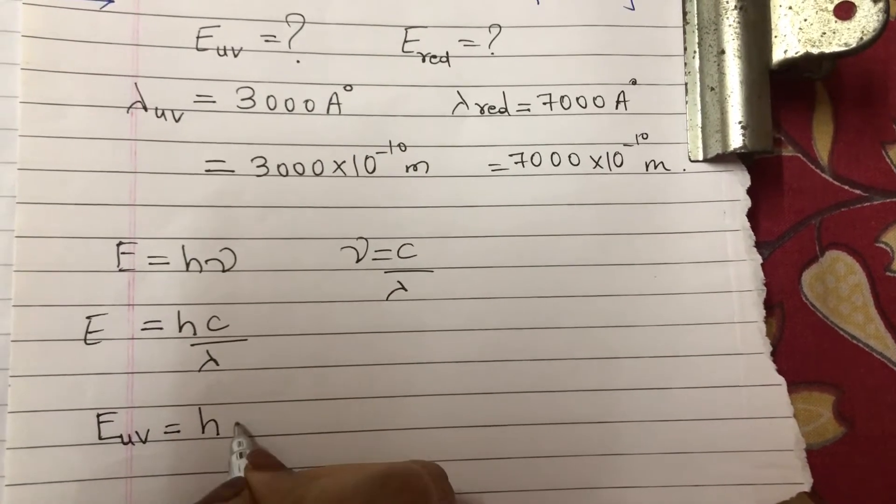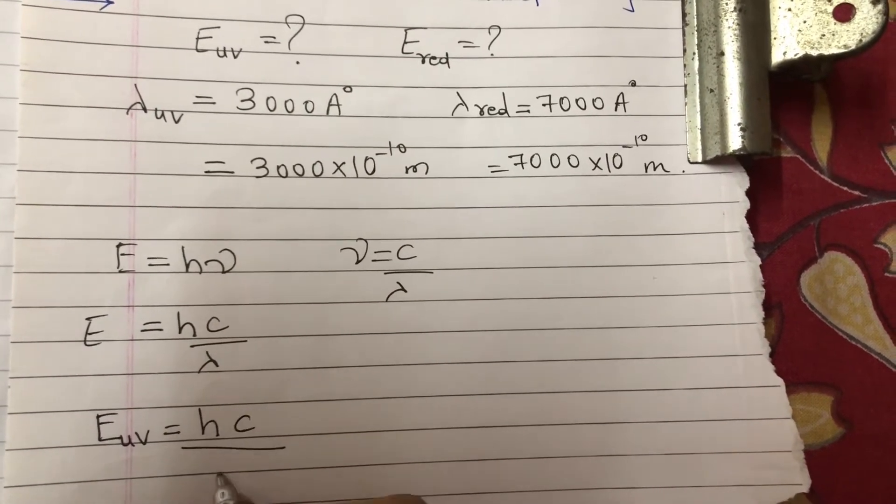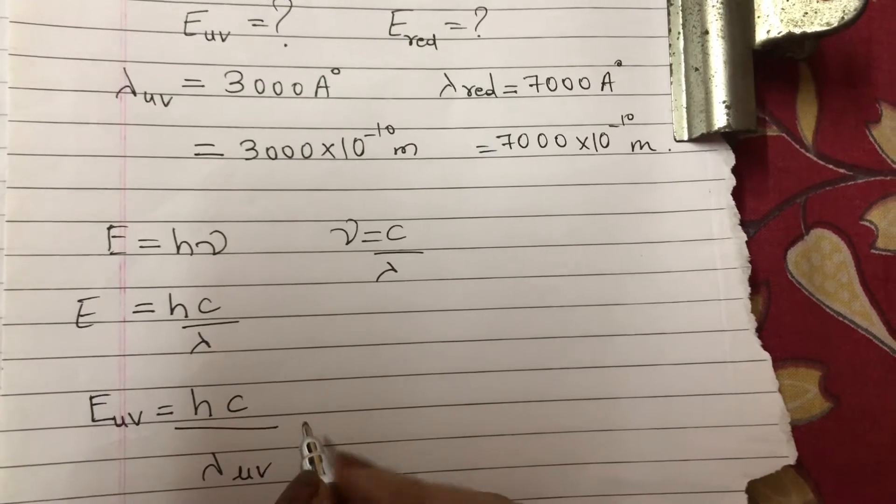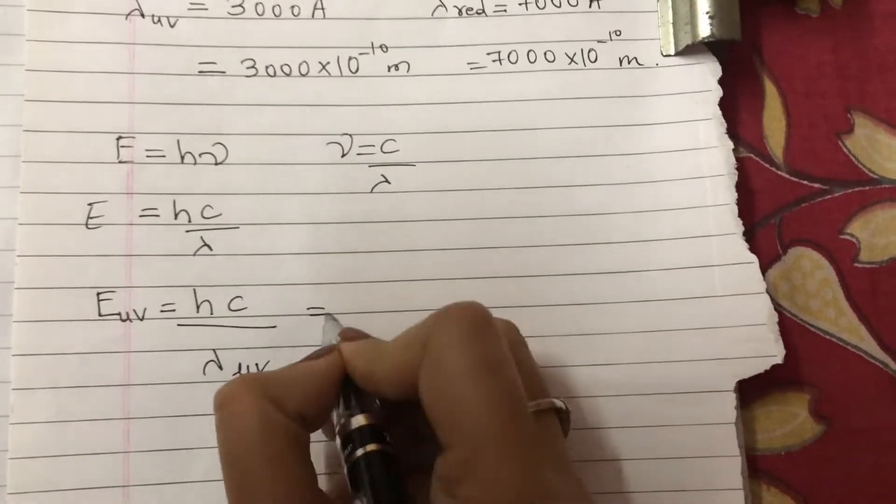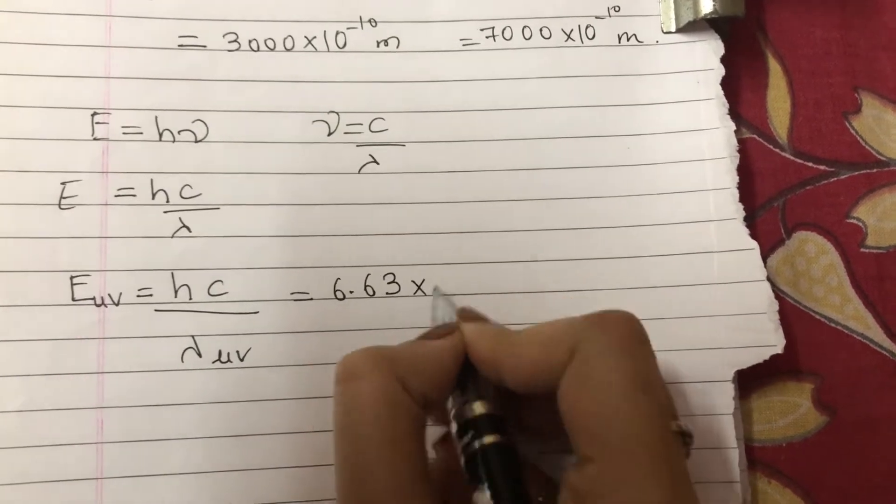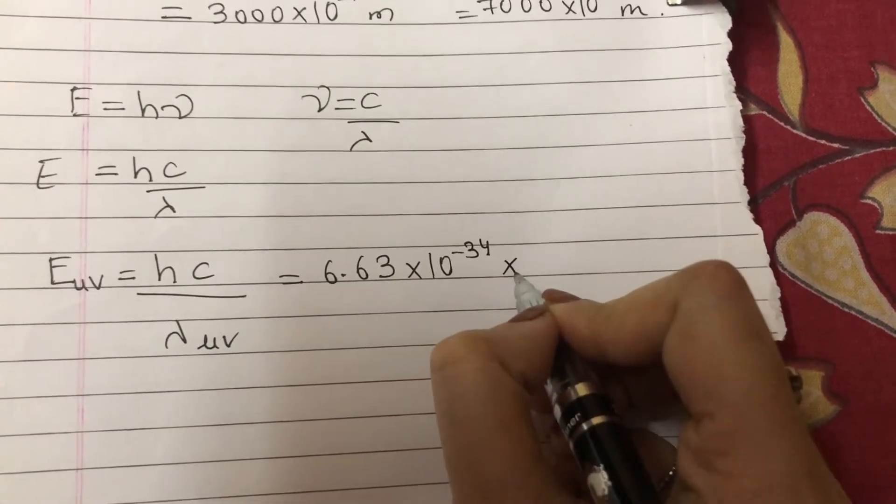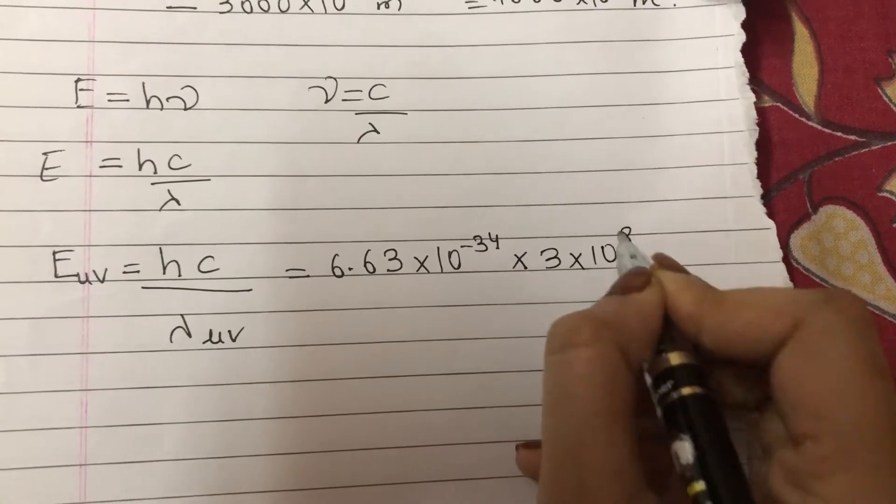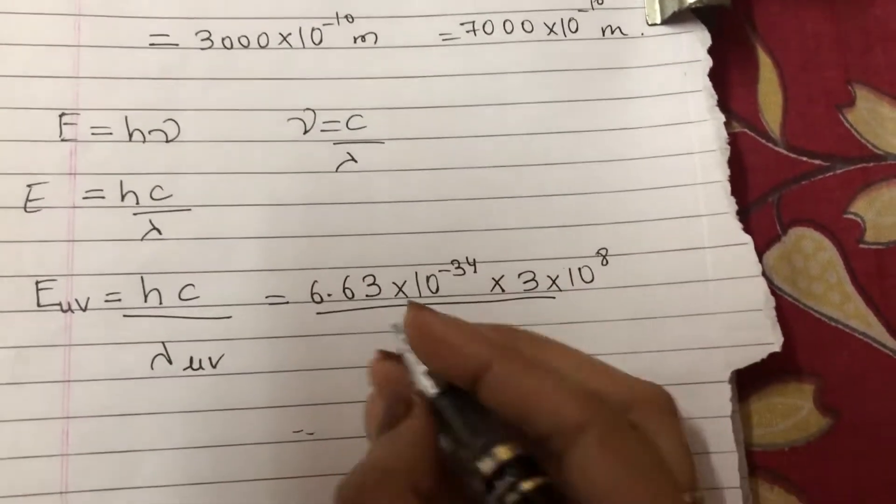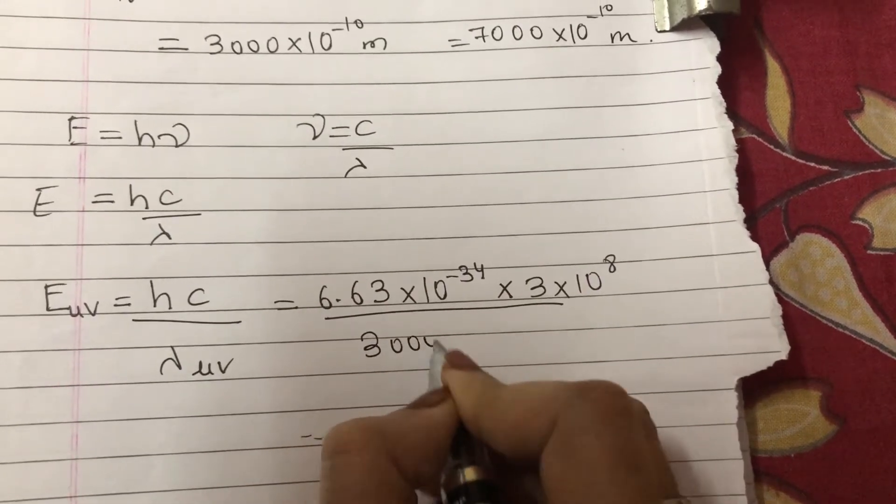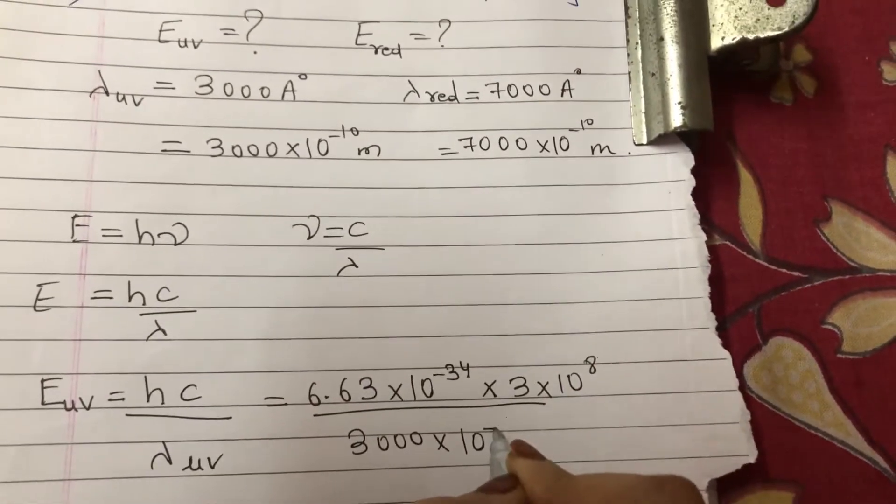For UV: E_UV = h × c / λ_UV. That's Planck's constant h = 6.63×10^-34, speed of light c = 3×10^8 m/s, and λ_UV = 3000×10^-10 meters.